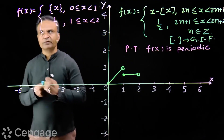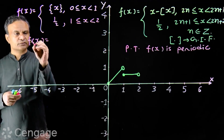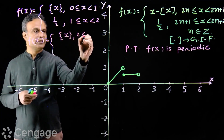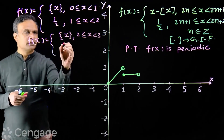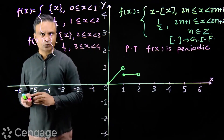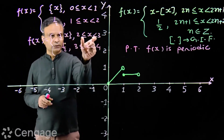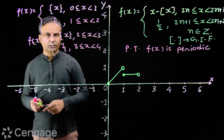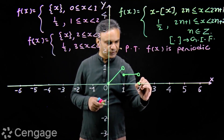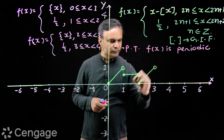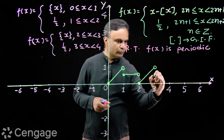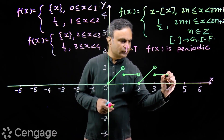Now putting n equals 1, we have f(x) equal to fractional part of x for 2 less than or equal to x less than 3, and 1/2 for 3 less than or equal to x less than 4. We draw the graph: for [2, 3) we have the fractional part of x, giving a slant line segment, and for [3, 4) we again have the horizontal line segment at y equals 1/2.